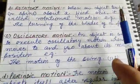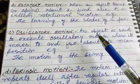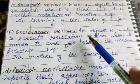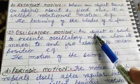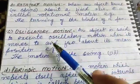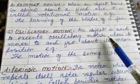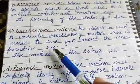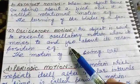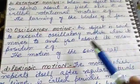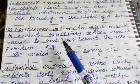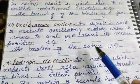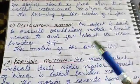Oscillatory motion: an object is said to execute oscillatory motion when it moves to and fro about its mean position. For example, the motion of a swing.